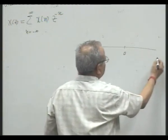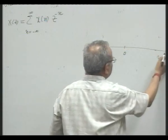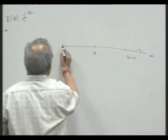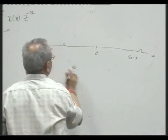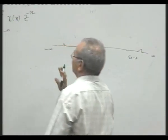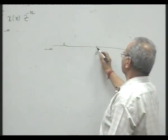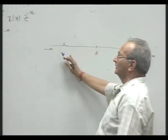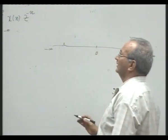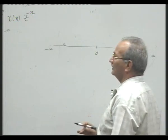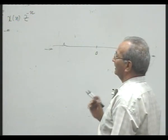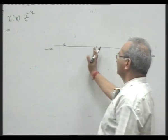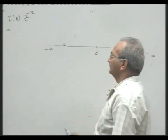Bilateral Z-transform is so called because it covers the entire time domain. The discrete-time axis goes from minus infinity on one side to plus infinity on the other. This is the positive time domain side, and this is the negative time domain side — that is why it is called bilateral, or two-sided Z-transform.